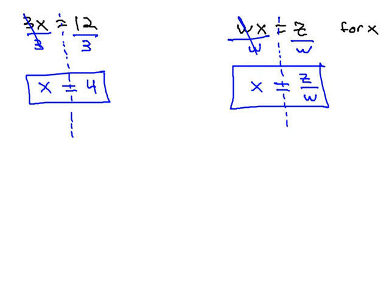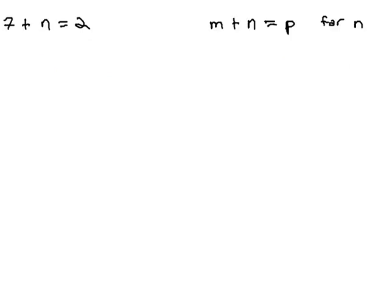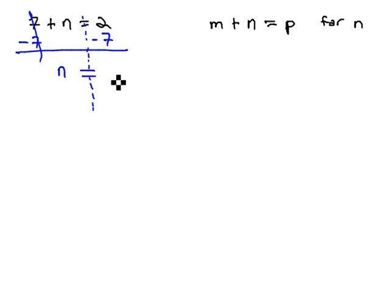We can follow this same pattern with addition and subtraction problems. In this problem on the left, we have 7 plus n equals 2. We've solved problems like this before. We get the variable we want, n, alone by subtracting 7, or 7 negatives on both sides. And n will be equal to 2 minus 7, which in this case works out to negative 5.